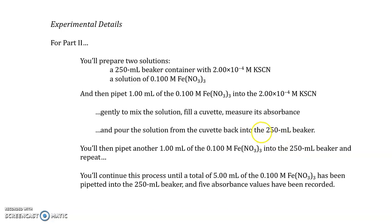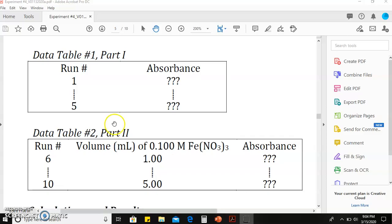Here is an image of what the data tables are likely to appear like. The first data table from part 1, which has runs 1 through 5, will involve recording the absorbance values. The data table in part 2, runs 6 through 10, will involve measurements of the absorbance of the different solutions produced upon the addition of the iron(III) nitrate.